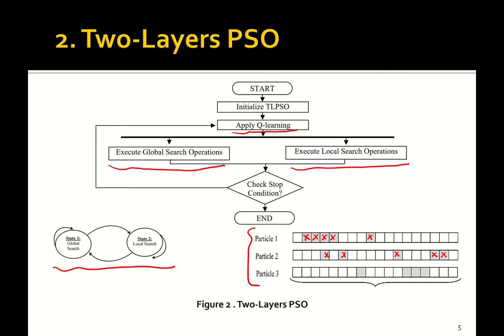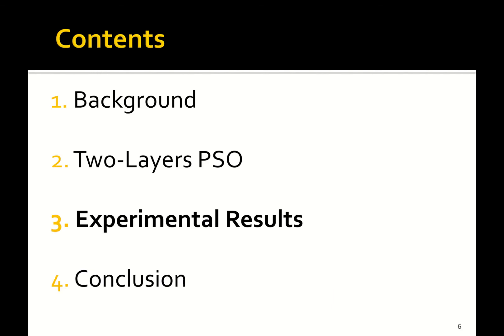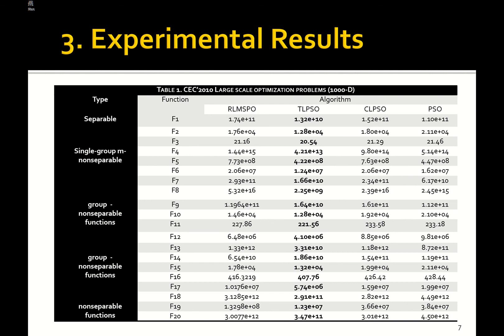To evaluate and assess this optimizer, in the experimental part we use a high-dimensional optimization problem benchmark: CEC 2010. It contains functions F1 through F20 — 20 functions in total — distributed across five types, including separable and non-separable categories.